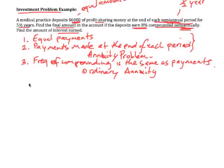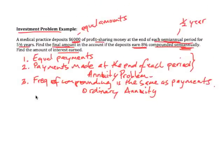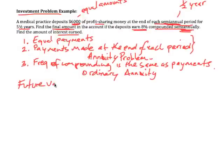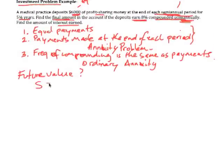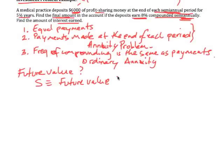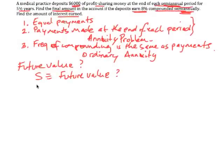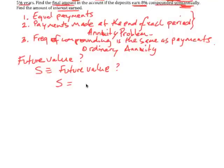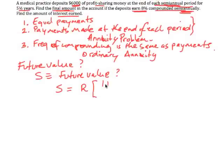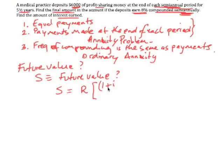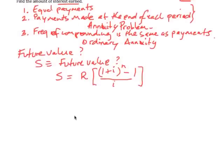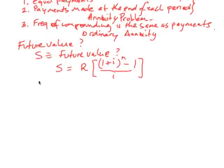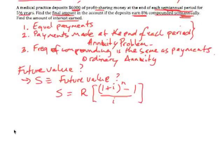Now an ordinary annuity means that we're looking at finding the final amount which would be the future value, and that's what we're looking at finding. So let's call S the future value. To find the future value, we use the formula for an ordinary annuity, which is S = R[(1+i)^n - 1]/i, where n is the number of periods.